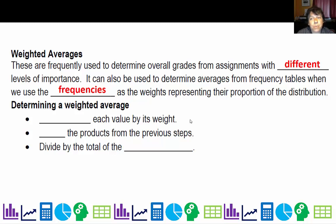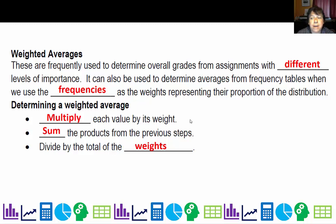To determine a weighted average, you multiply each value by its weight, or its frequency, depending. Then you sum the products from the previous steps and divide by the total number of weights.